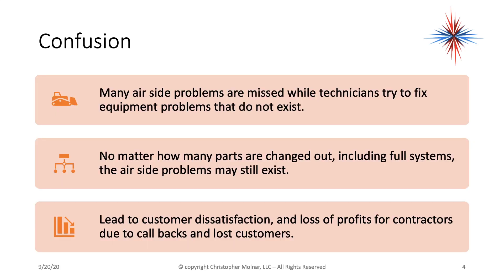Many air side problems are missed while technicians try to fix equipment problems that do not exist. By equipment I mean the air handler, the furnace, or the condenser. But a lot of times these problems are air side, which would include all the duct work and everything that occurs within duct work, as well as pressures. No matter how many parts are changed out, including full systems, the air side problems may still exist because the duct work is not always replaced with the system. This can lead to customer dissatisfaction, loss of profits for contractors due to callbacks, and lost customers. So air side diagnosis can affect your business.